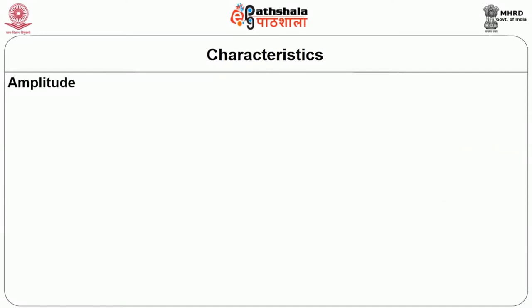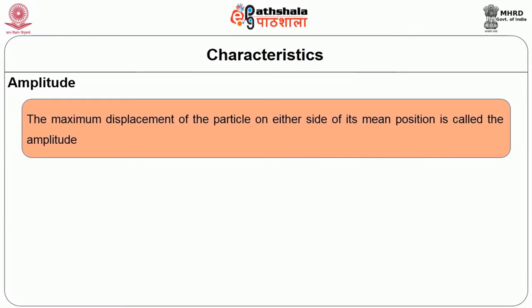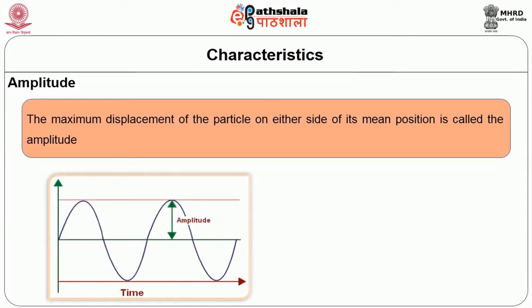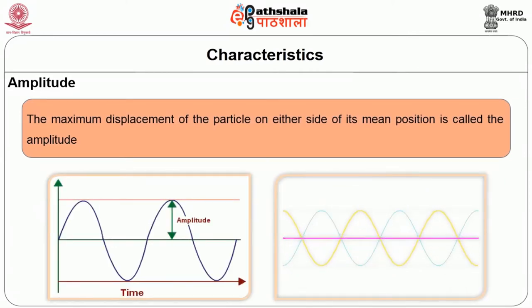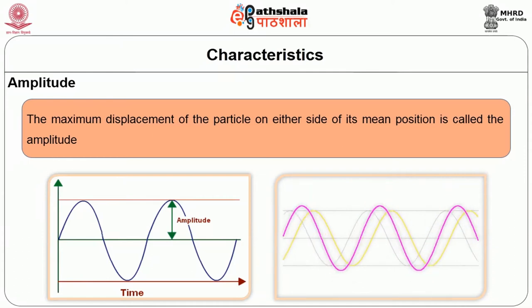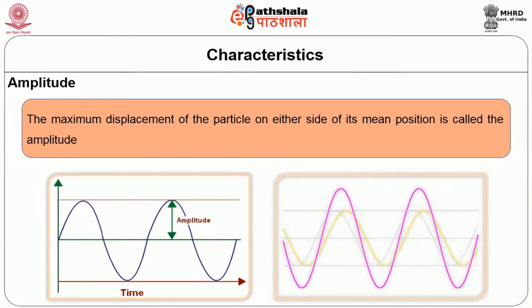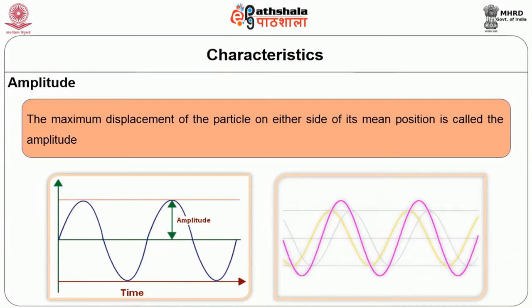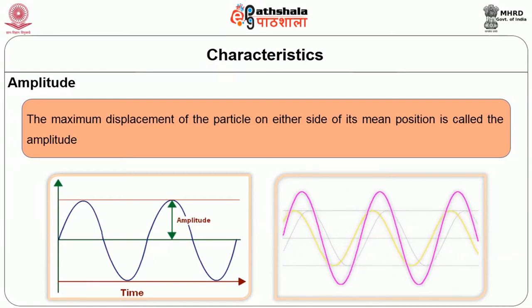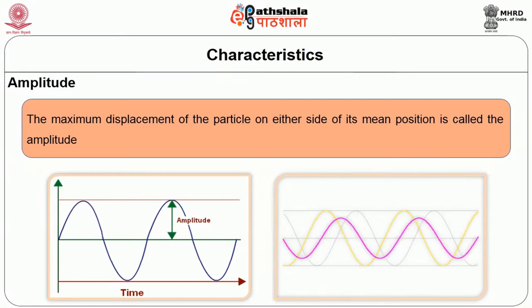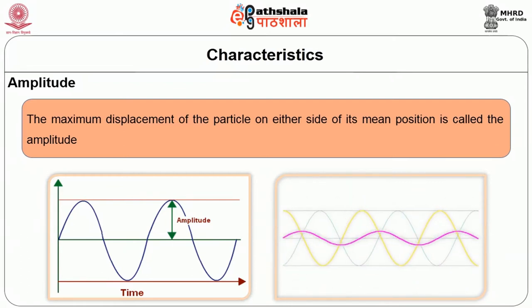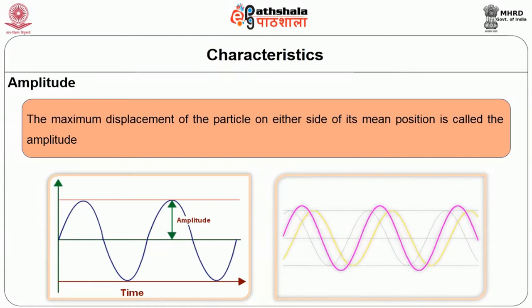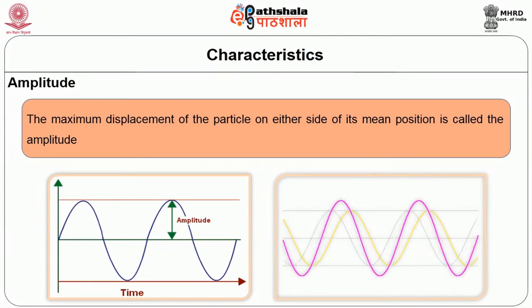The fifth characteristic is amplitude. The maximum displacement of the particle on one side of its mean position is called the amplitude. Have a look at the figures to understand the meaning of these terms. Could you identify what each term means? Have you understood how each term differs from one another? Each characteristic has a reason to differ.